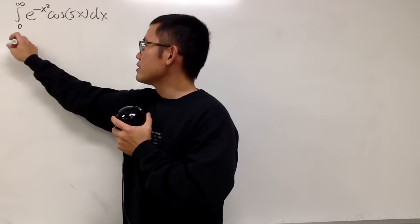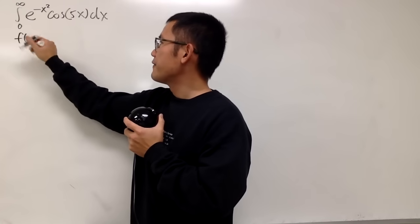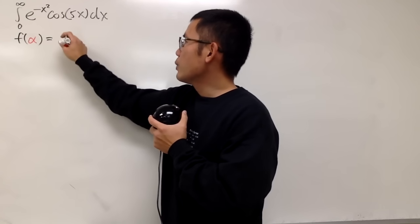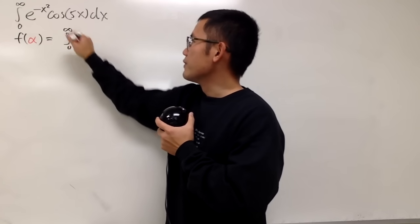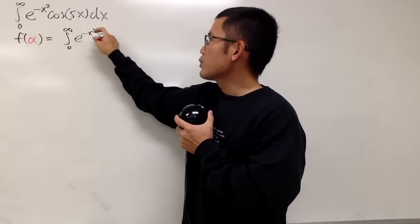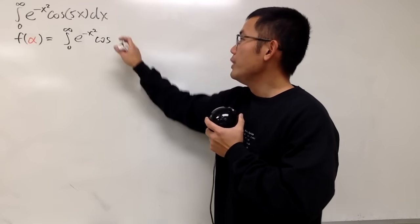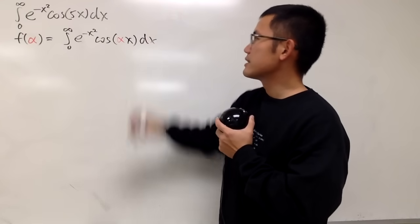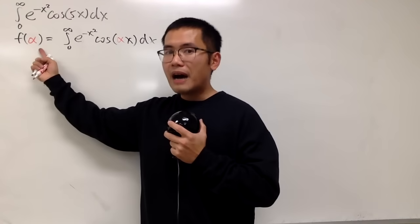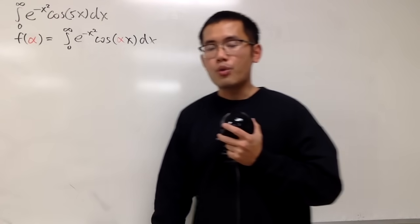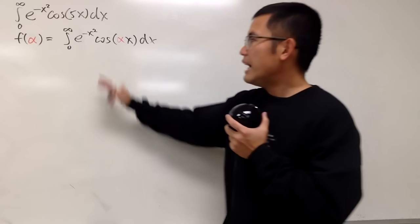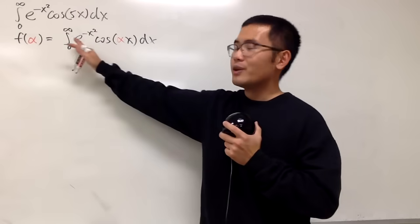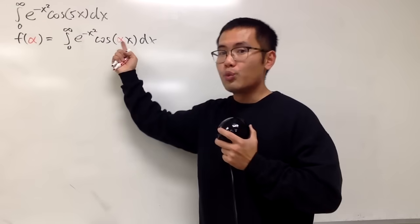I'm going to start off by calling this to be f, and let's call the parameter alpha. This right here we'll write as the integral from 0 to infinity of e to the negative x squared, cosine, but instead of the 5, we are going to put down alpha and then x dx. Because f of 5 is exactly our original integral. After we finish the procedure, you will see you can compute this kind of integral with whatever number you want right here.